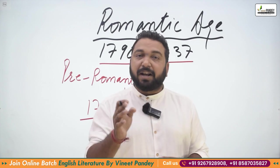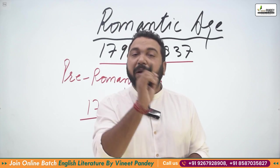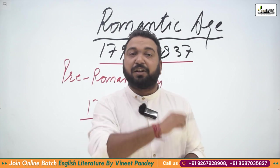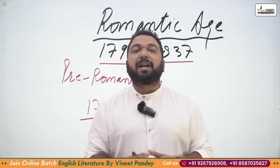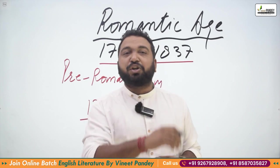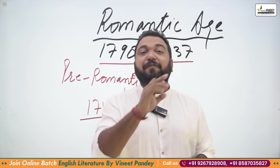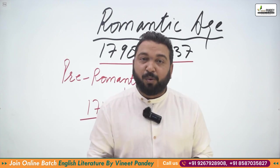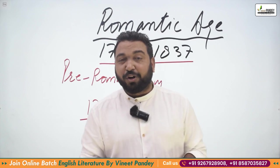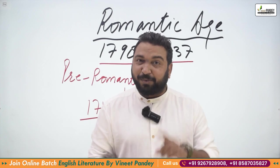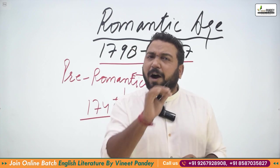Jeremy Collier, in 1698, came with a pamphlet — A Short View on the Immorality and Profaneness of the English Stage — and questioned writers, saying they had degraded Restoration literature. He targeted nine writers; the first was Vanbrugh, the second was Congreve, and another was John Dryden. This is a NET exam question.